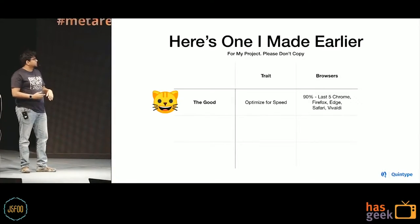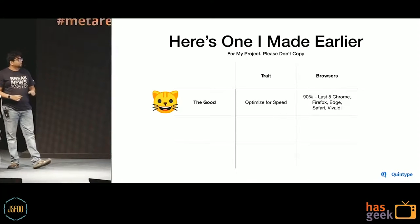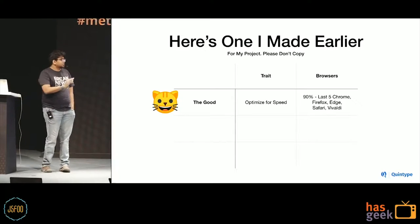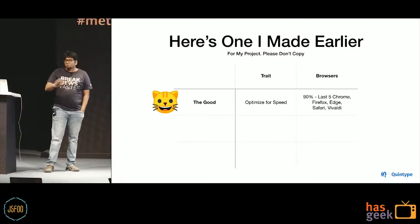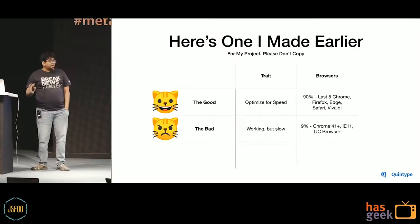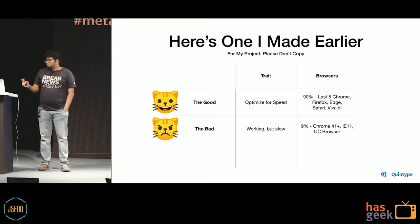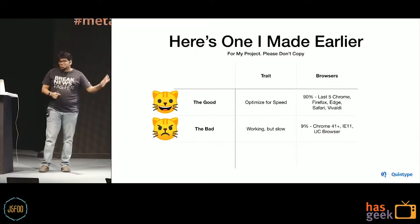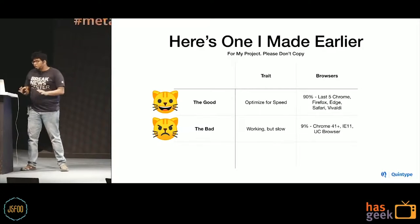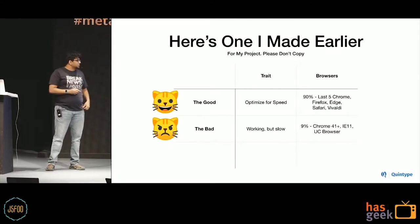For me, it was the 'good' - browsers I'm optimizing for speed: maybe the last five Chromes, Firefox, Edge, Safari, Vivaldi. These are browsers I really care about and where I'll spend time benchmarking performance. The 'bad' - browsers I want to work but are kind of slow. As the previous speaker mentioned, UC Browser is a pretty big browser in India, we care about it working but we're okay if it's a little slow. And the last category is browsers you just don't care about at all.